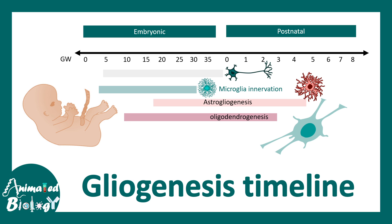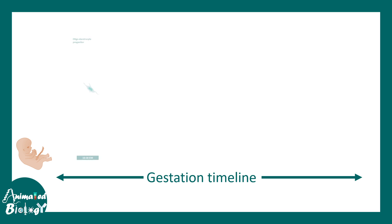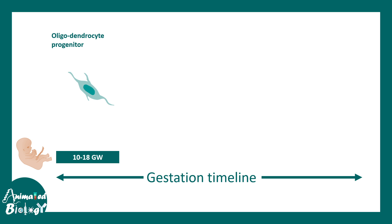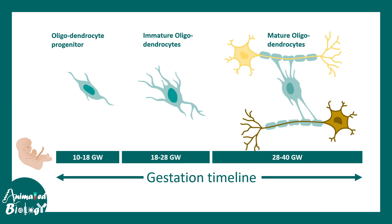Now let's look at the timeline of oligodendrocyte development, which takes place from early gestation. From gestational week 10 to 18, oligodendrocyte progenitor cells are formed. These progenitors eventually give rise to immature oligodendrocytes, which have multiple processes and are morphologically more complex. They then form connections with neurons at around gestational week 28 to 40 in the human embryo, becoming mature oligodendrocytes.